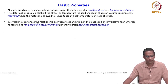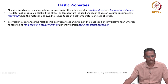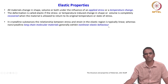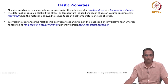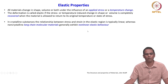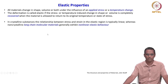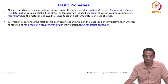In crystalline substances, the relationship between stress and strain in an elastic region is typically linear. Whereas non-crystalline long-chain molecular materials generally exhibit non-linear elastic behavior. So it is not necessarily the case that stress is proportional to strain — that linear relation may not be valid for all kinds of material. The moment you change from crystalline to non-crystalline materials, for example polymers, this linearity no longer exists.